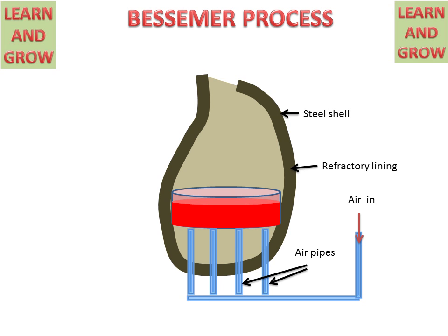Now we see the working of the Bessemer process. Air will be transferred with the help of pipes to the molten pig iron and it will reach the pig iron. In the container, an oxidation process will occur, which will remove the impurities like silicon and manganese and form a slag.